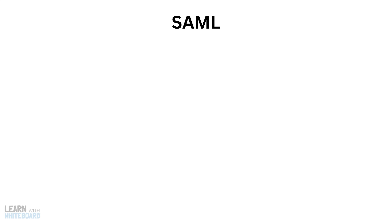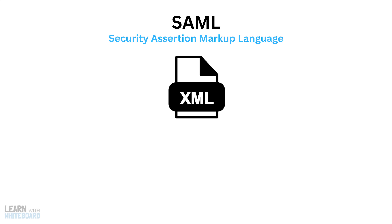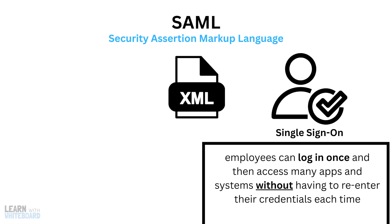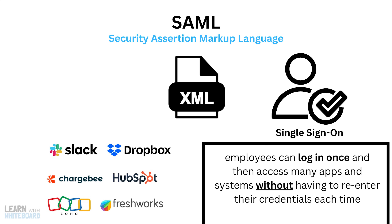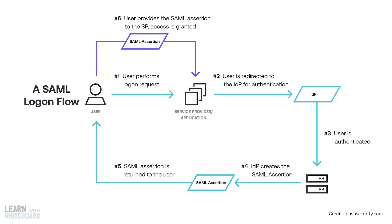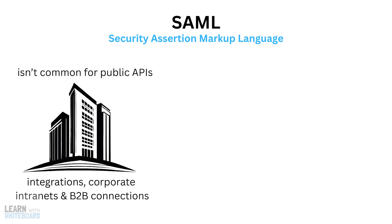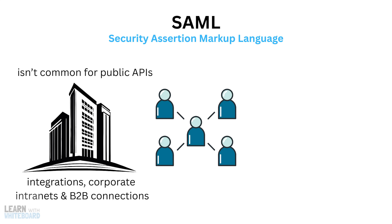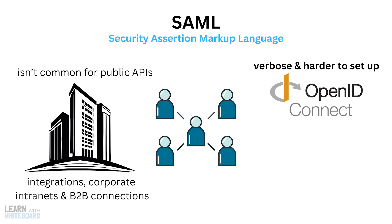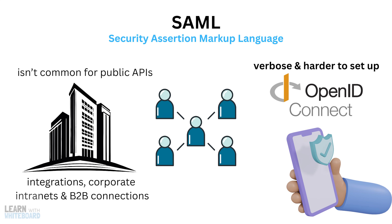Then there's SAML, or Security Assertion Markup Language. This one is XML-based and is huge in large enterprises. It's mainly used for single sign-on, meaning employees can log in once and then access many apps and systems without re-entering their credentials each time. SAML works by passing authentication assertions from an identity provider, like a company's central login system, to the services that need them. While SAML isn't common for public APIs, it plays a big role in enterprise integrations, corporate intranets, and B2B connections where centralized identity management is critical. Although more verbose than newer standards like OpenID Connect, it remains widely deployed in many enterprises.